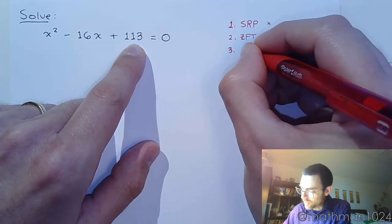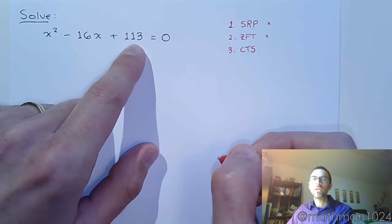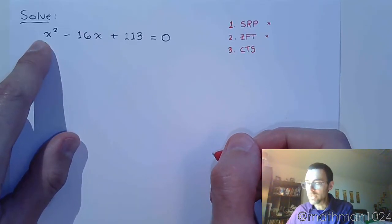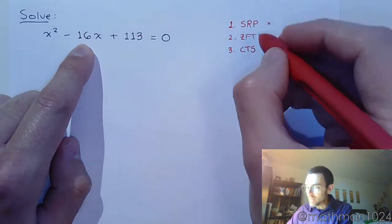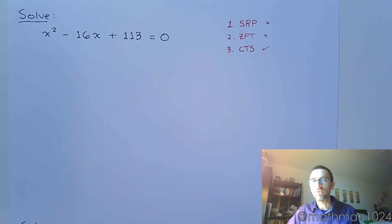The third thing that we try to do, we try to use the method of completing the square. Now, remember that in order to complete the square, there are certain things that we want. We want this lead coefficient to be 1, it is, and we want this guy to be even, which means this is going to be the best and most efficient way for us to solve this quadratic equation.